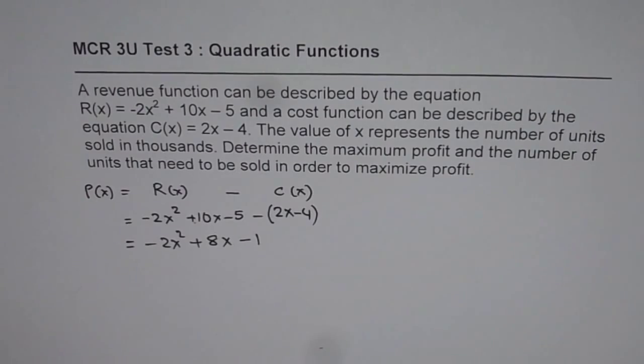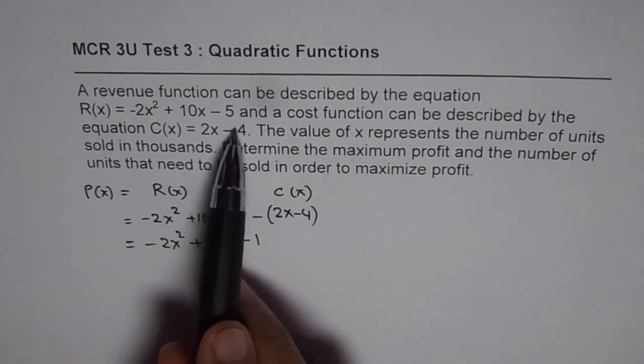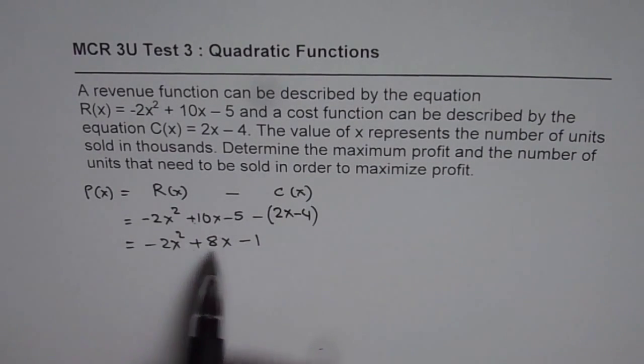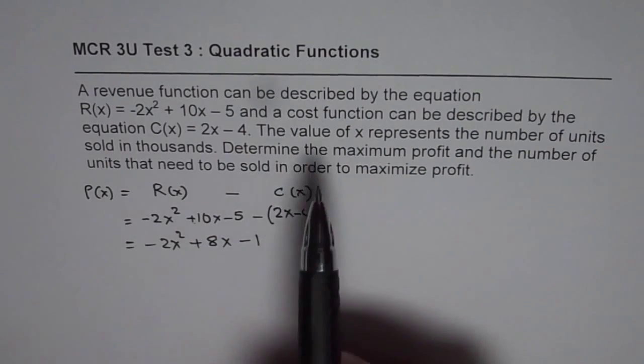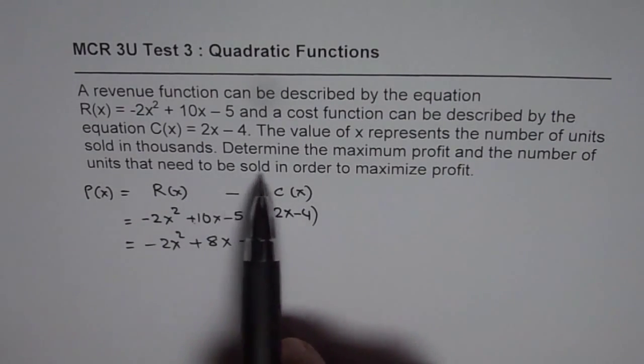So which gives us minus 1. So be careful at this stage. So when you do minus of C(x), minus 2x plus 4, that's what you get. So minus 5 plus 4 will be minus 1. So that is your profit function. Now we need to determine the maximum profit and the number of units that needs to be sold.